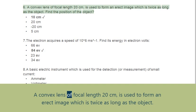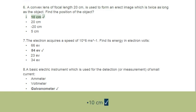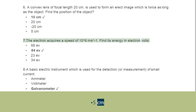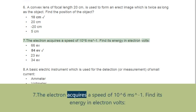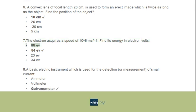Question 6: A convex lens of focal length 20 cm is used to form an erect image which is twice as long as the object. Find the position of the object. Options: A. 10 cm, B. 16 cm, C. 66 cm, D. 84 cm. Additional options: 23 cm, 34 cm.